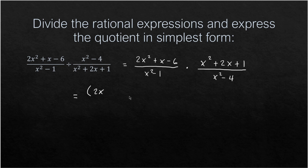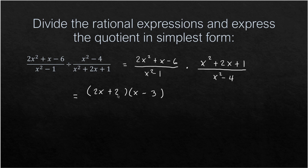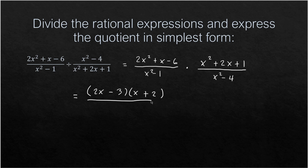Now we factor the polynomials. For 2X² + X − 6, using trial and error we get (2X − 3)(X + 2) — because 2X × 2 = 4X and −3 × X = −3X, which add to positive X. The denominator X² − 1 is a difference of two squares: (X + 1)(X − 1).